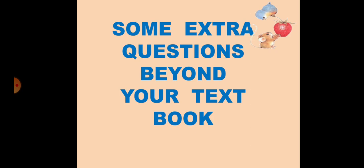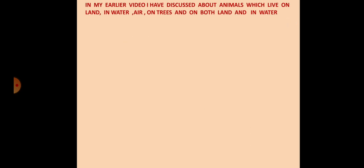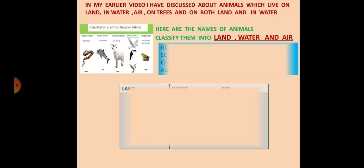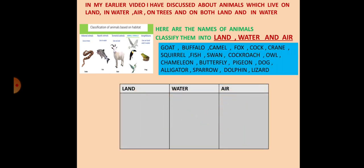Some extra questions beyond your textbook. In my earlier video I have discussed about animals which live on land, in water, air, on trees and on both land and in water. This was the picture in the previous video. Now what is the question you have to do here? Here are the names of animals. Classify them into land, water and air.